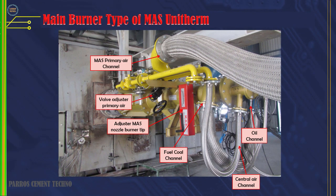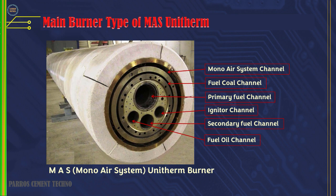The MAS Unitherm burner is somewhat different from the previous burner types, because it only uses one primary air channel but can be adjusted straight or slightly rotated. MAS stands for Mono Air System — the MAS Unitherm burner.